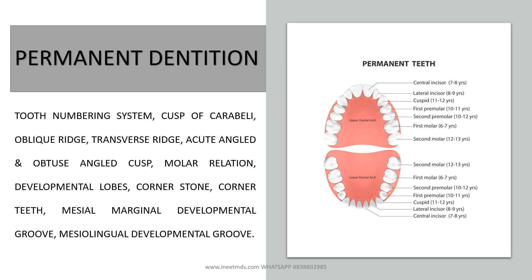The last topic is permanent dentition. Cover the different types of tooth numbering systems, what the cusp of Carabelli is, the difference between oblique ridge and transverse ridge and which teeth they are present in, acute-angled and obtuse-angled cusps — which cusps are which and how to identify them — molar relation, developmental lobes, what the cornerstone and corner teeth are, mesial marginal developmental groove — present in maxillary premolar — and mesiolingual developmental groove — present in mandibular premolar. Just knowing the location of these grooves is enough; these two are very important.